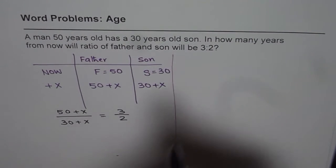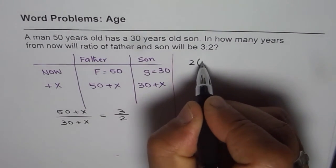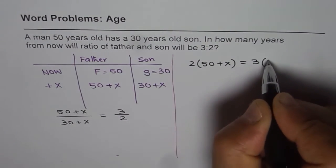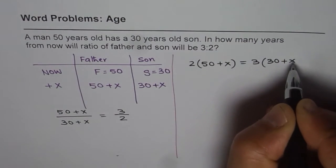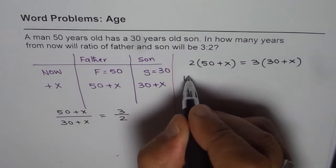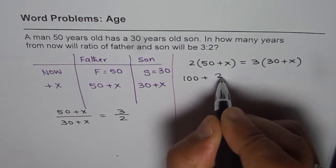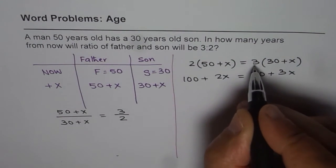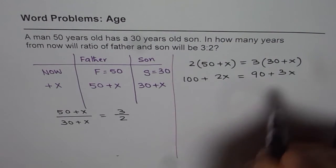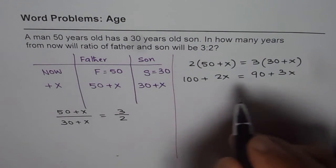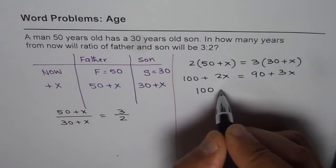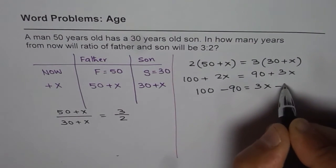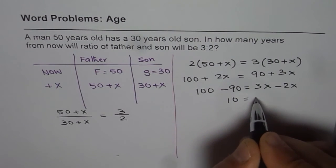Cross multiplying, we get 2(50 + x) = 3(30 + x). Opening the brackets: 100 + 2x = 90 + 3x. Bringing the variables together: 100 - 90 = 3x - 2x, which gives 10 = x.